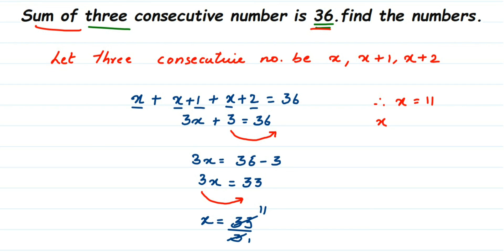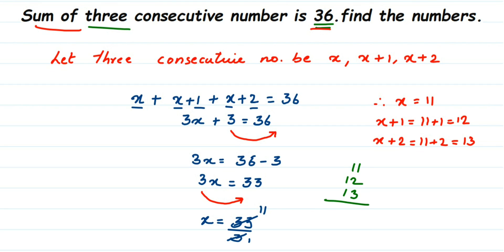The second number is x plus one, which is 11 plus 1 equals 12. The third number is x plus two, so 11 plus 2 equals 13. So 11, 12, and 13 are the three consecutive numbers. To verify, you can add them: 11 plus 12 plus 13 gives 36, which matches the given condition.